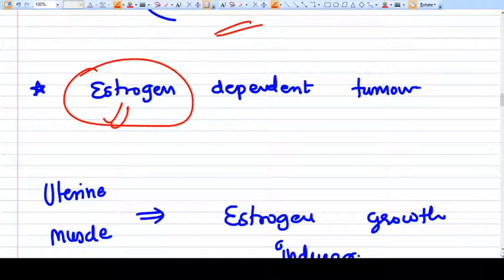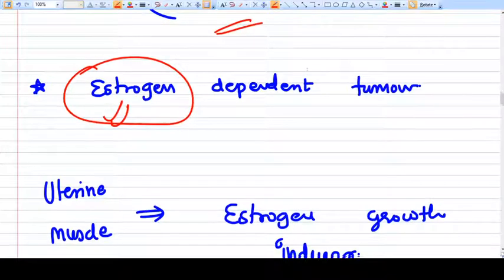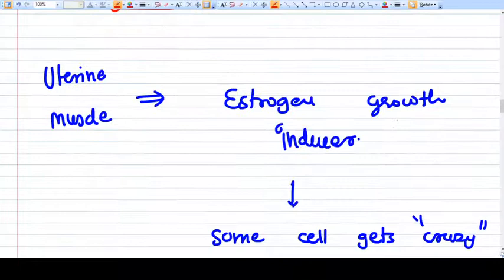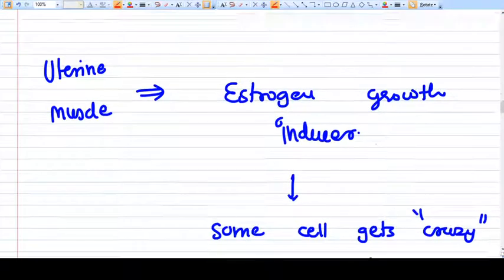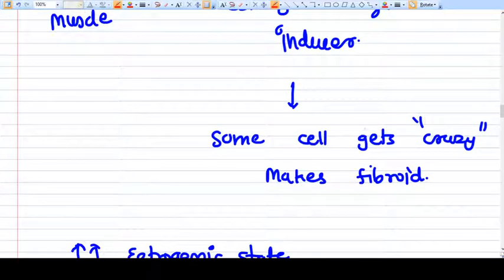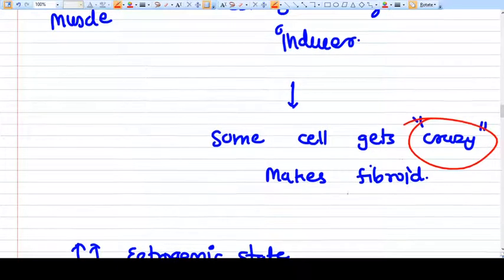This is their effect. So with fibroids, due to hyper-estrogenic state, when estrogen is on the higher side for a long time, some of the uterine muscle becomes uncontrollable for growth. Estrogen is a growth inducer, so some cells get crazy and make fibroids.